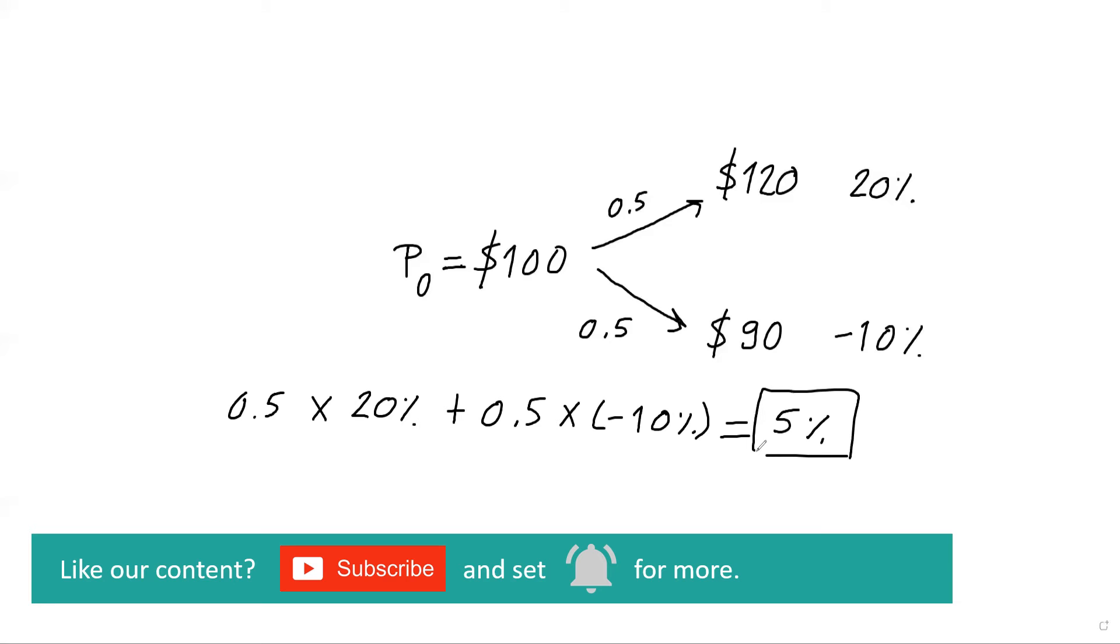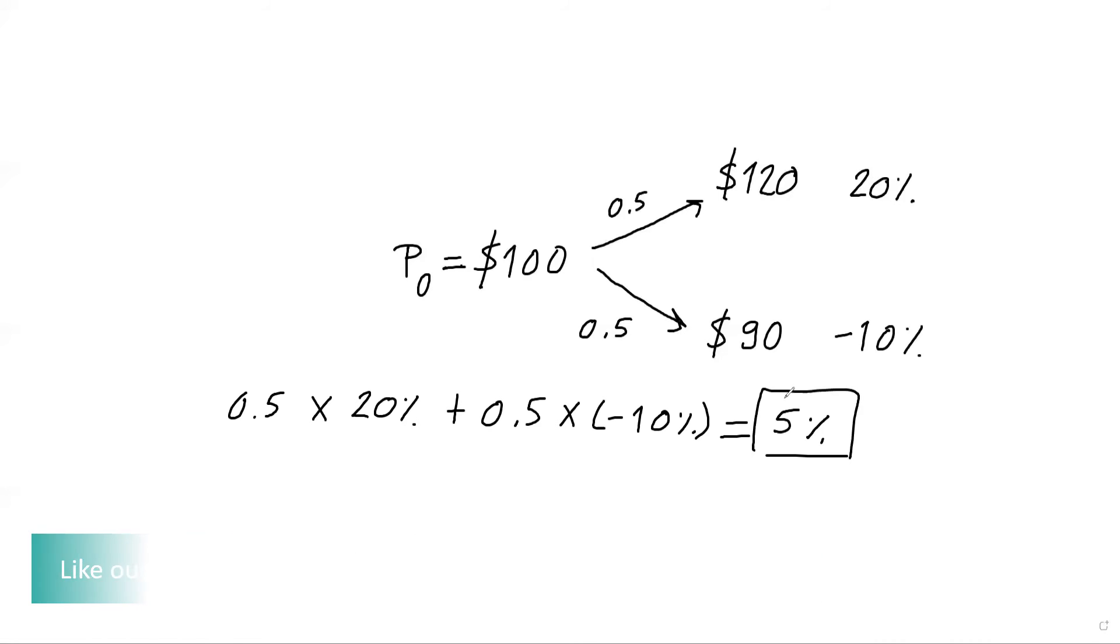So in general, for example, if the stock every year can go up by 20% and can go down by 10% with equal probability, in the long run, this is the sort of the return I will obtain by holding this stock.